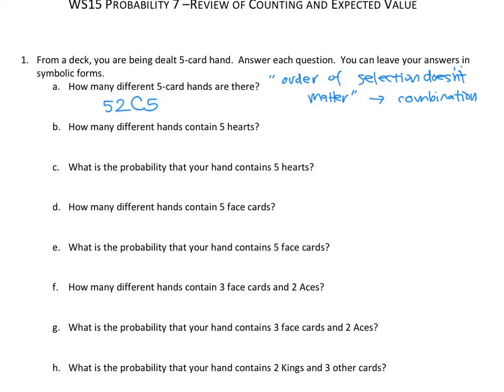Part B: how many different hands contain five hearts? This is a little different from part A. In part A, the five cards can be any cards out of those 52. But here I want five hearts, so it's almost like a conditional situation — I'm picking cards not from 52, but only from hearts. There are 13 hearts, so the answer is 13C5.